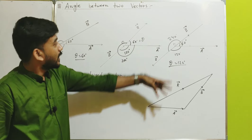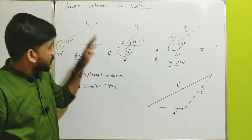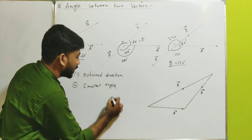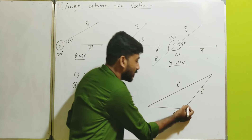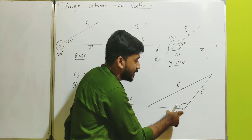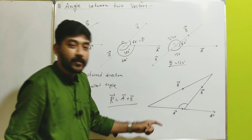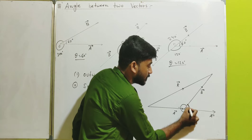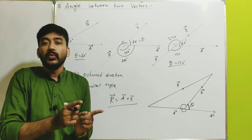Now let us apply this concept to the triangle law of vector addition. If vector A and vector B are given, then the resultant vector R equals A plus B — that is the triangle law. The interesting question is: what should be the angle between A and B? The interior angle shown is not the answer, because at that point vector A is inward and vector B is outward. So first we make vector A outward using the shifting property, then we find the smallest possible angle between them. That smallest angle is what we take as theta, the angle between the two vectors.